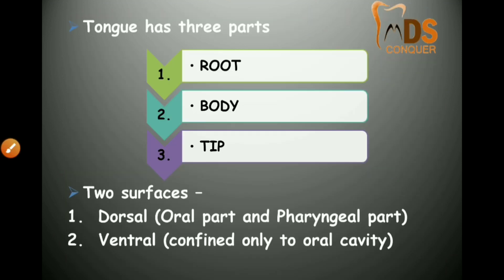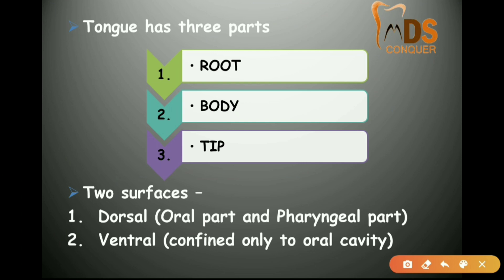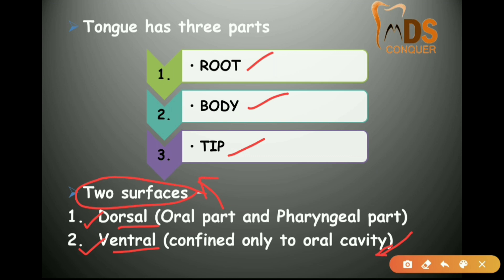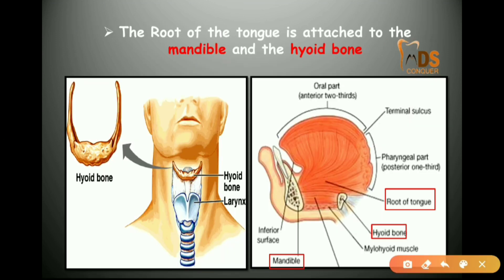The tongue has three parts: root, body, and tip, and two surfaces — dorsal and ventral. The ventral surface is confined only to the oral cavity, whereas the dorsal surface has an oral part and a pharyngeal part. The root of the tongue is attached to the mandible and the hyoid bone.